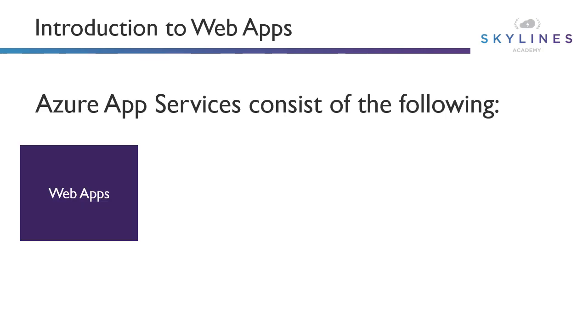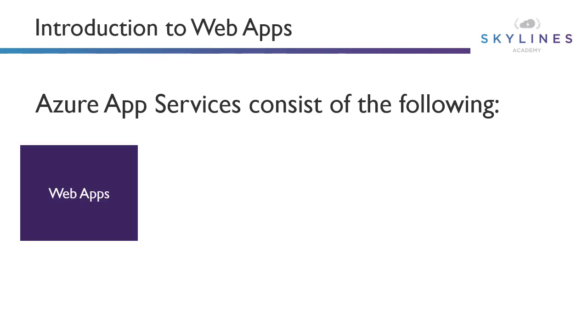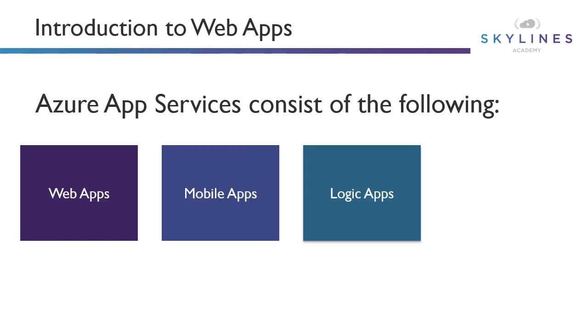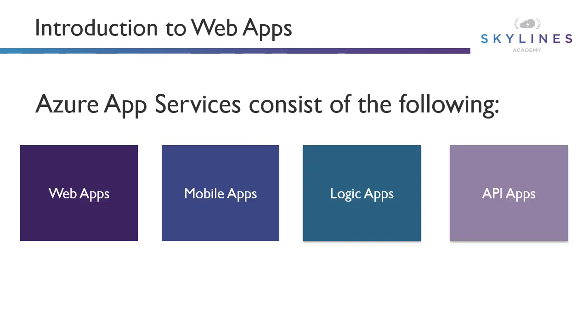It consists of the following four: there are web apps, mobile apps, logic apps, and API apps. All of these can run on the same underlying infrastructure of virtual machines that support them.